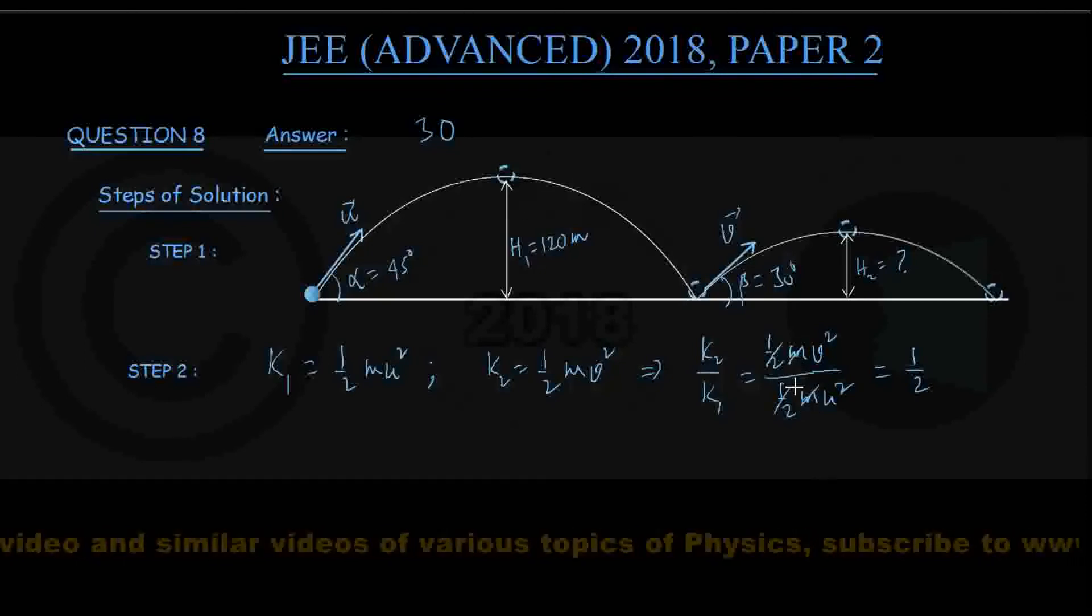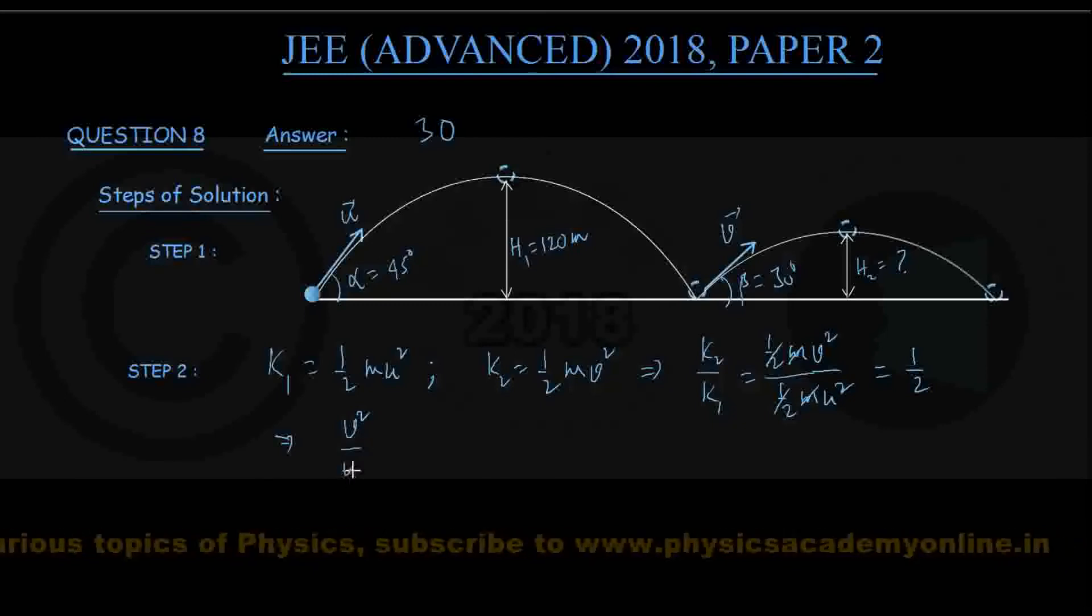So k2 by k1 is half and you can see these halves are cancelling out, the mass of the ball m cancelling out. We get an important equation, that is v squared upon u squared, that is equal to half. I am calling it equation number 1 for future use.